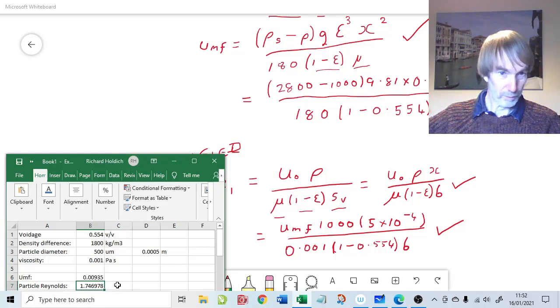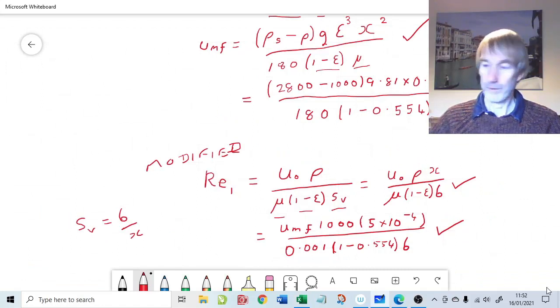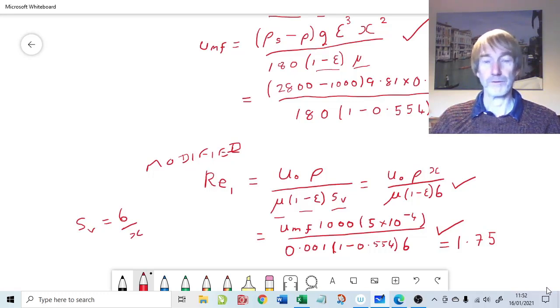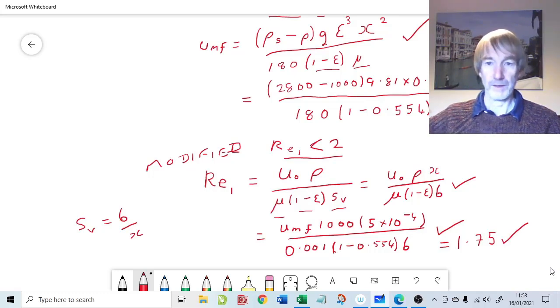The particle Reynolds number comes out at 1.75. So that gives us a value of about 1.75. Is that demonstrating relatively low turbulence? Because a Reynolds number is always the ratio of inertial and viscous forces. So we need to know what the threshold is for significant turbulence. In the modified Reynolds number, we're looking for a Reynolds number to be less than 2. So long as the modified Reynolds number is less than 2, then we have insufficient turbulence to worry about it. We can use a streamline or laminar flow equation, and that's okay.